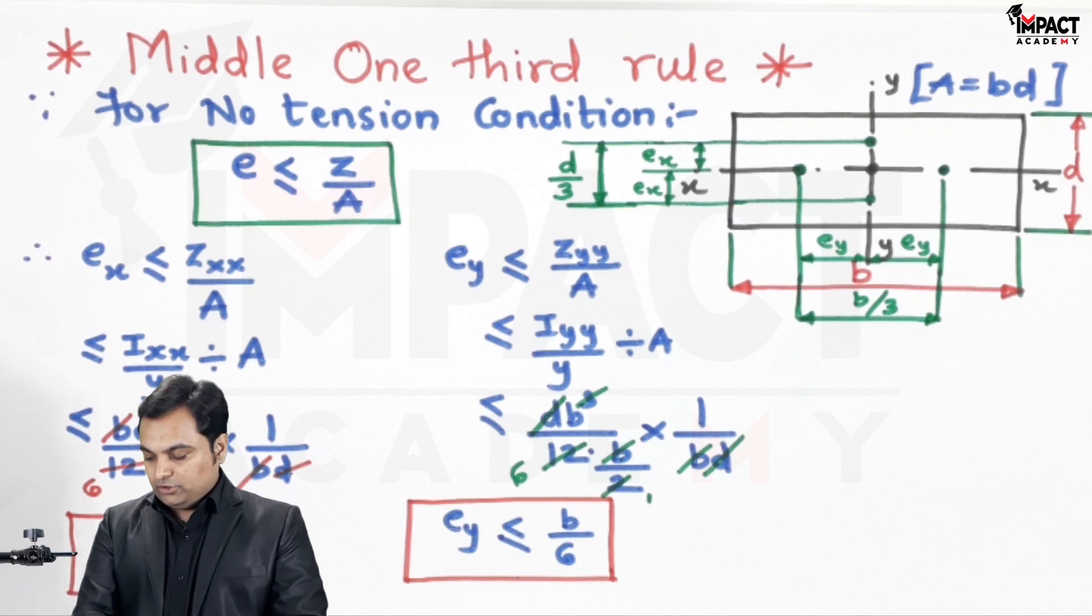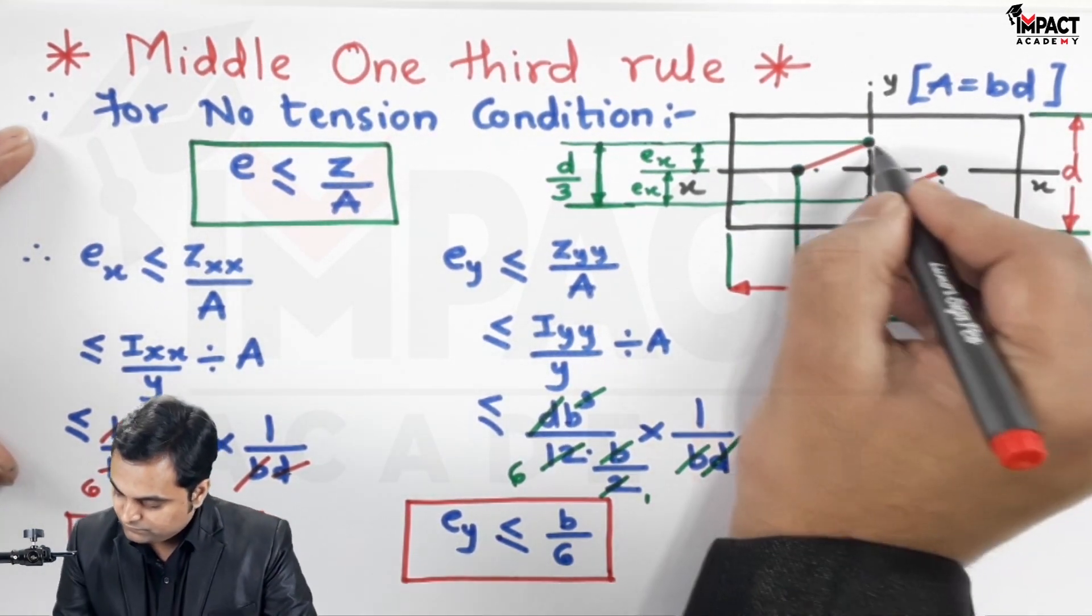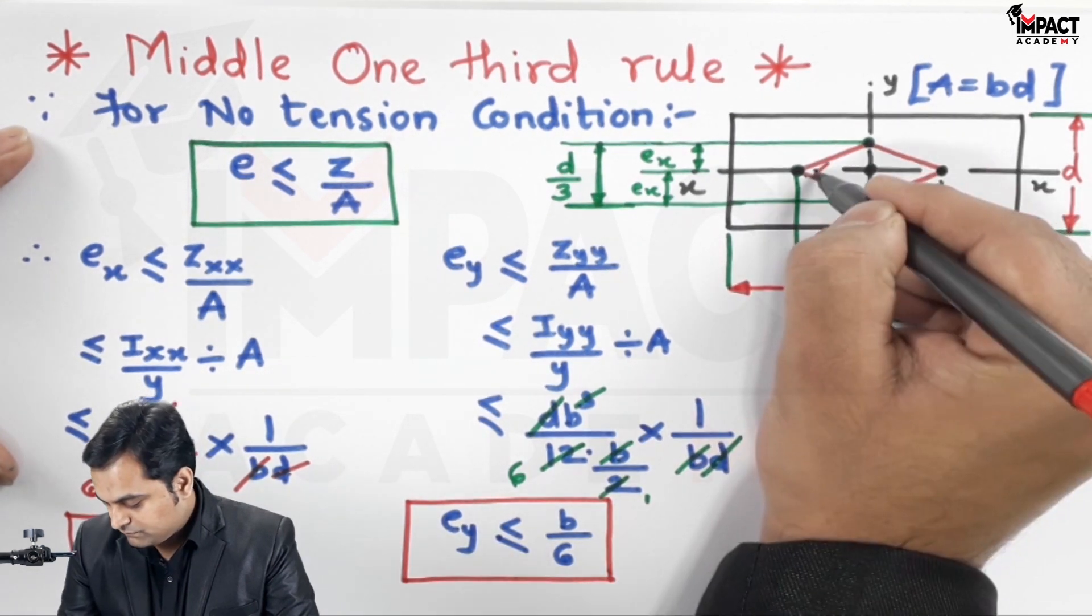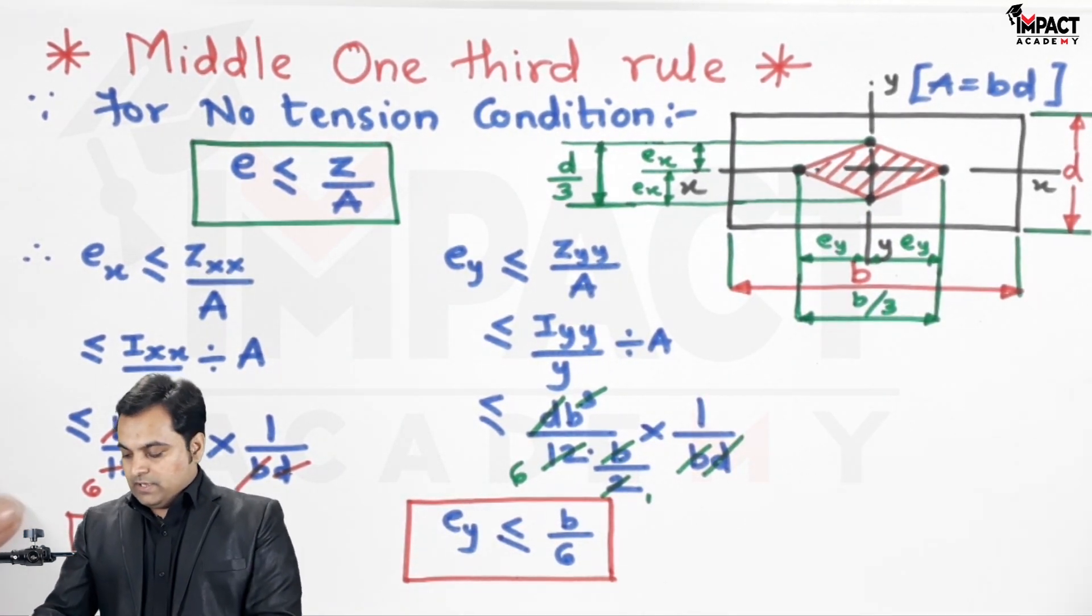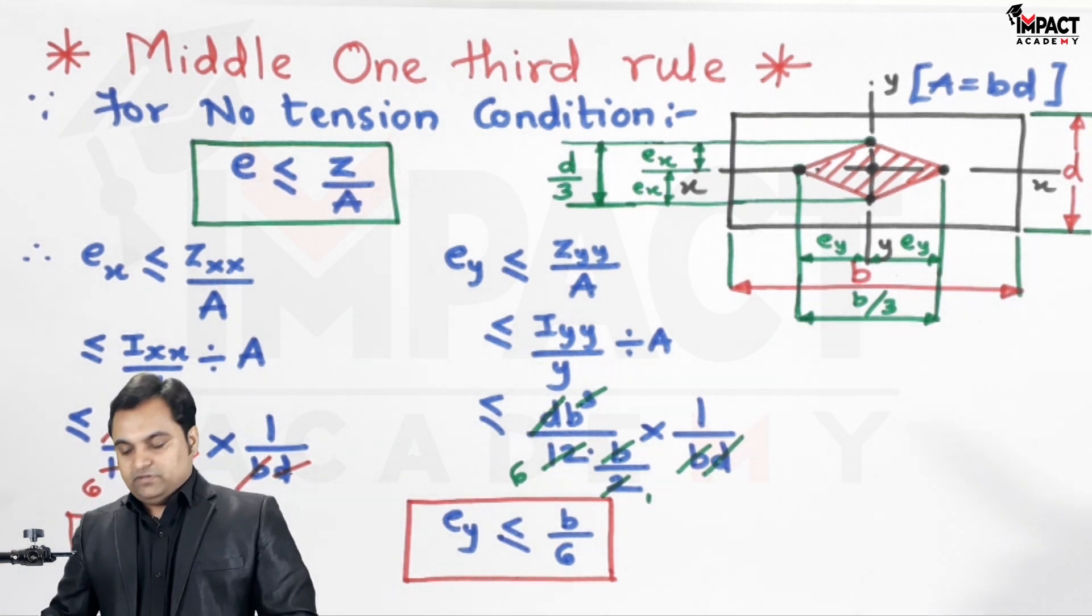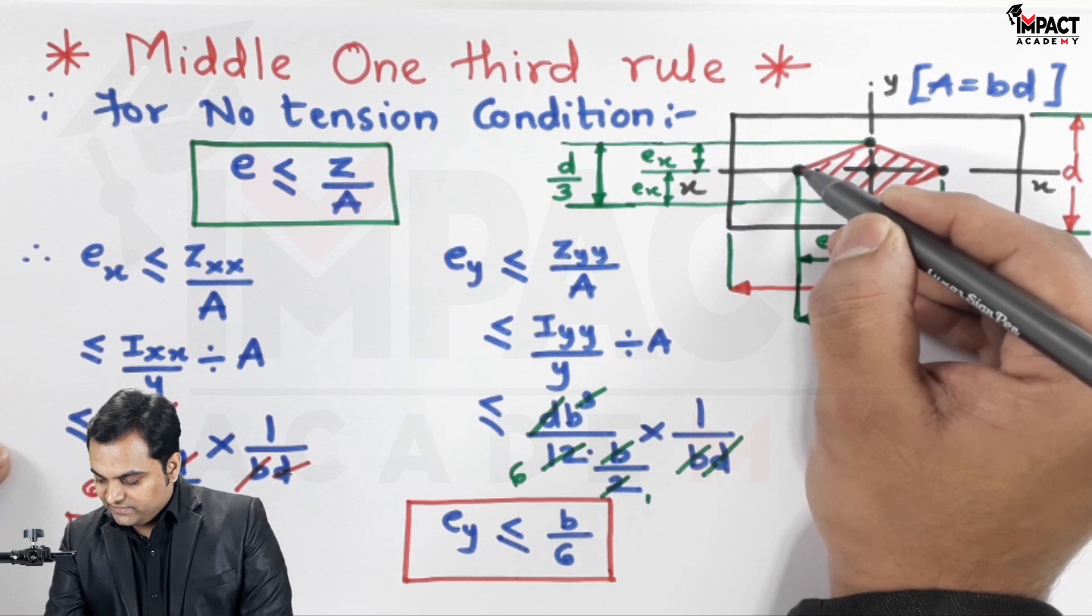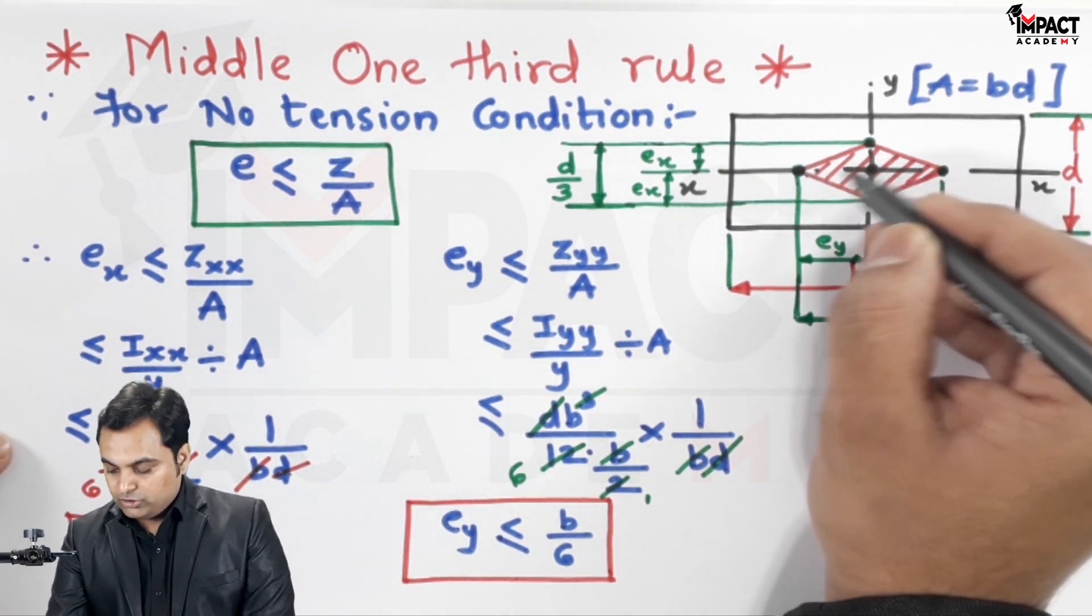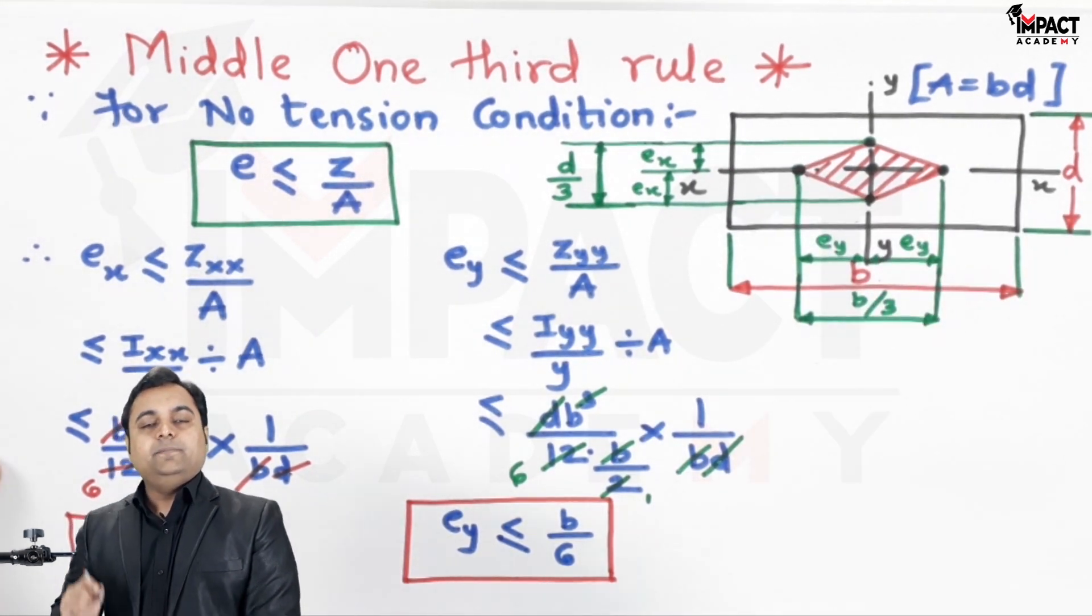So when I join all these points, here I am getting this area. And the meaning of this area is whenever inside this area if we are placing the load or if we are placing it onto the boundary of this area, there will be no tension in the column.